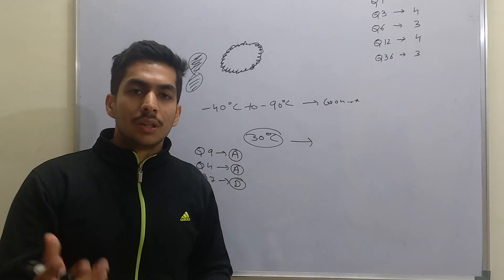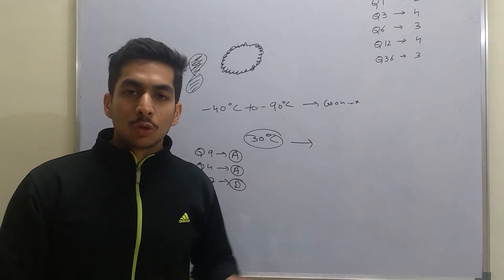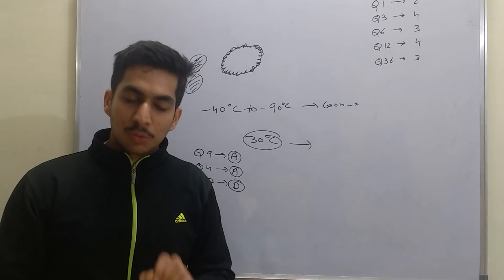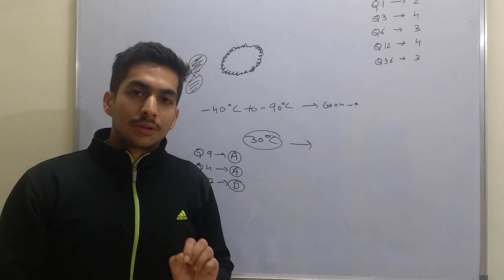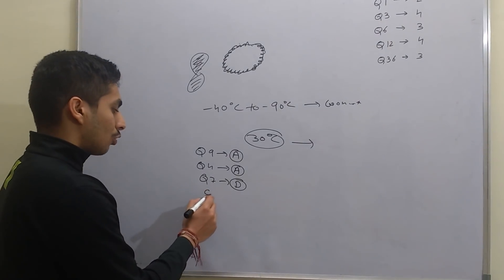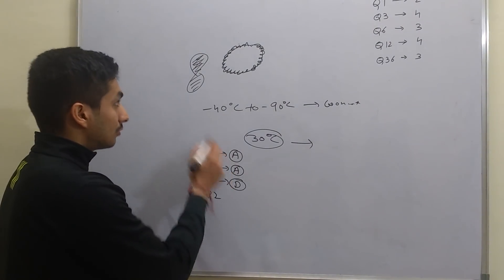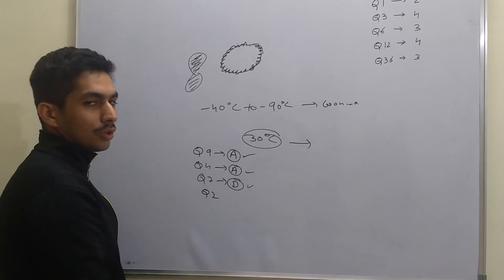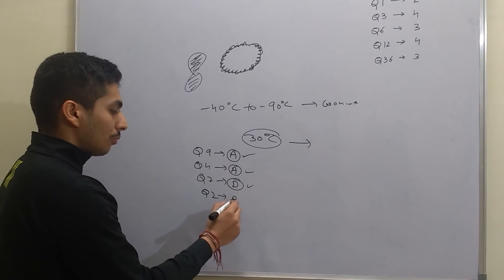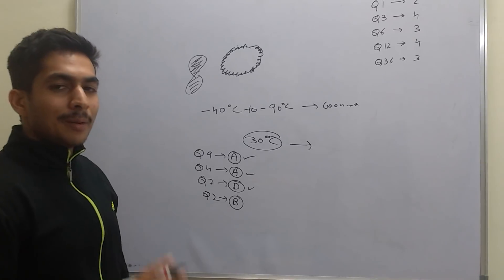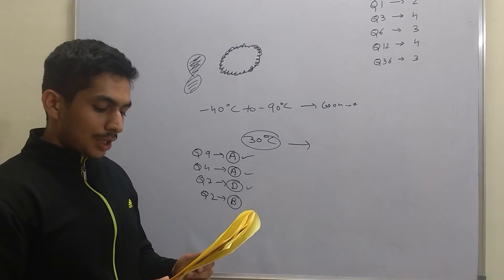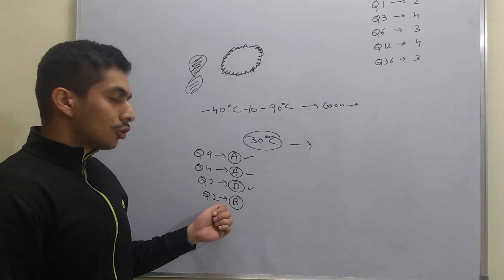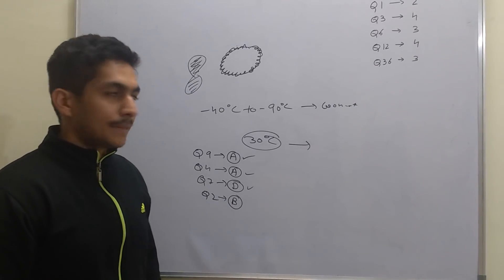I have some doubt about Q2 because I don't know exactly what the paper setter intended. But going logically, it has to be option B. I am sure about questions 4, 7, and 9, but slightly less than 100% confident on question 2.